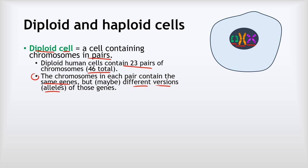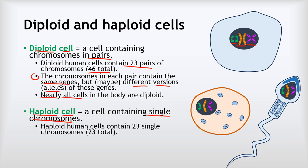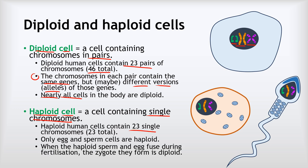Check out the video later in this playlist on genetics for more detail on how alleles work. Nearly all the cells in the body are diploid — the only ones that aren't are your sperm cells if you're male and your egg cells if you're female. A haploid cell is a cell containing single chromosomes rather than pairs. In humans, that means just 23 single chromosomes, so the only haploid cells are egg and sperm cells.